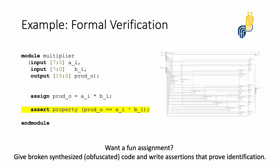As an example, we taught students relevant concepts like SystemVerilog assertions. On the left is an example of a SystemVerilog assertion proving that the circuit on the right, which is synthesized, actually implements the correct logic. For a fun assignment, I gave students broken synthesized code — effectively obfuscated — and had them write assertions that proved they had identified the bug in their test bench. The assertion would pass if they found the bug correctly, but would fail if they did not.